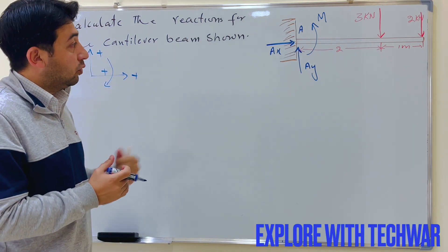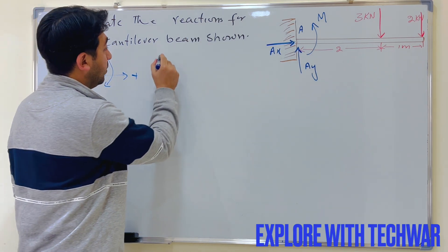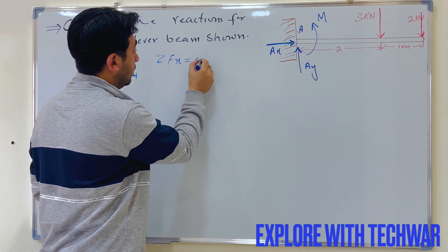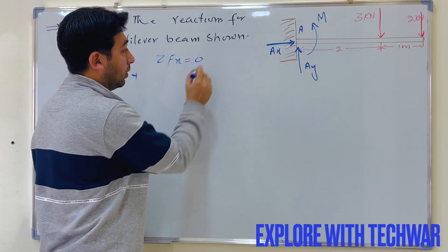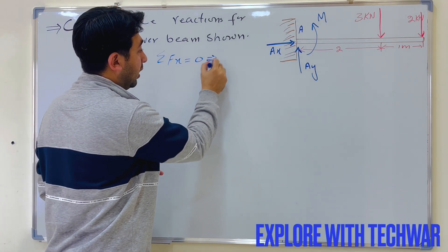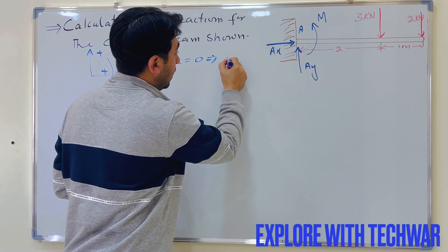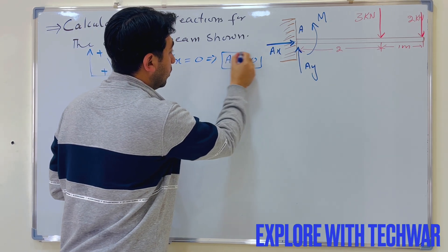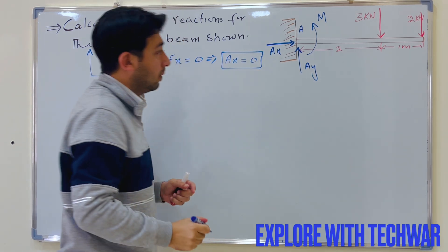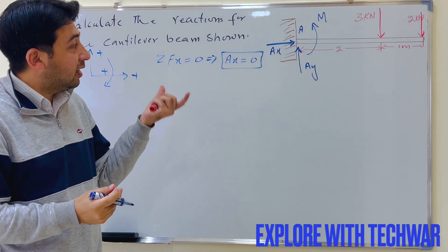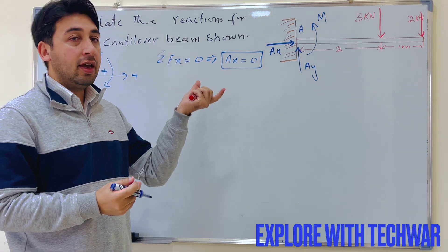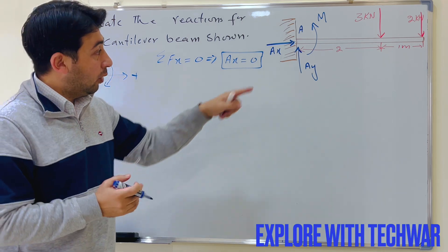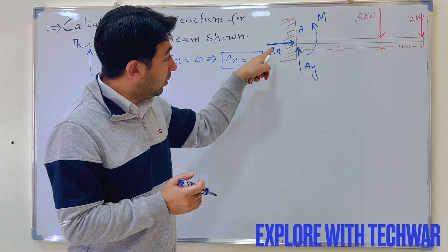To find AX, we take the sum of forces in the X direction equal to zero. There is only one force, AX, and it equals zero — there is no other force in the X direction. So the reaction AX is zero.